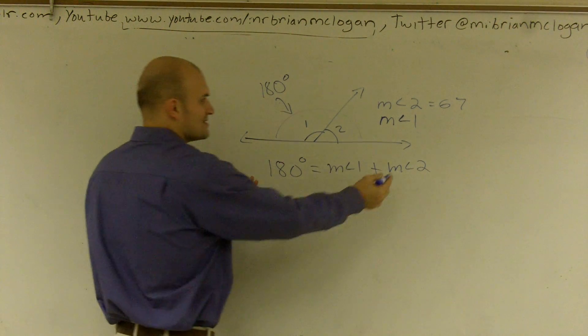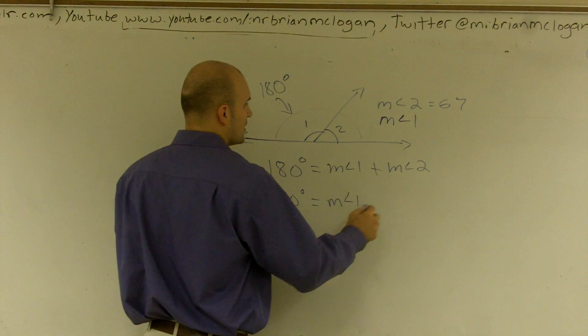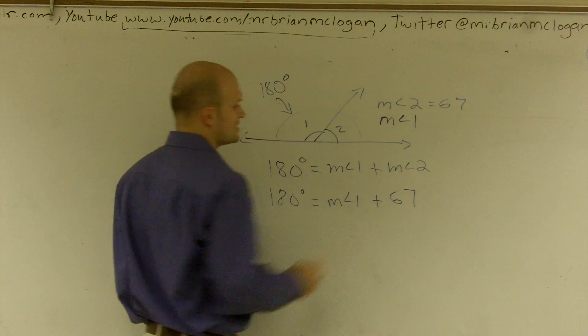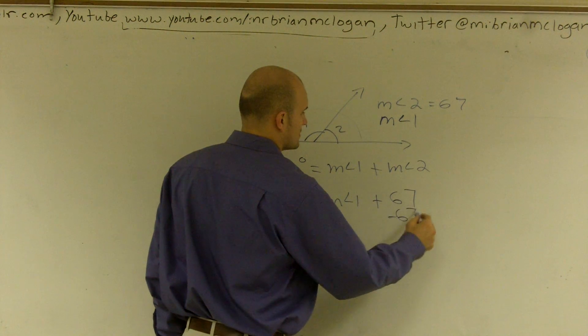So therefore, since I know what measure of angle 2 is, that's 180 degrees equals measure of angle 1 plus 67. So to solve for measure of angle 1, I'll just subtract 67.